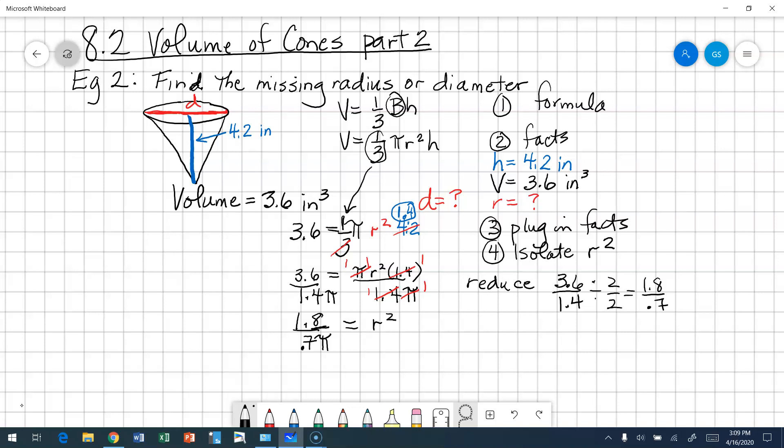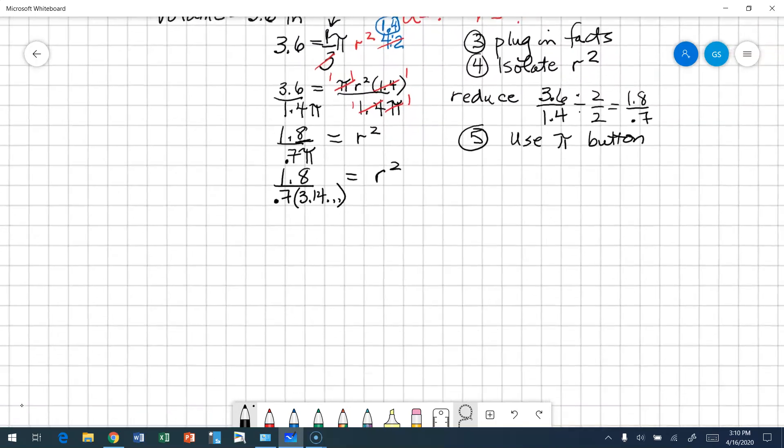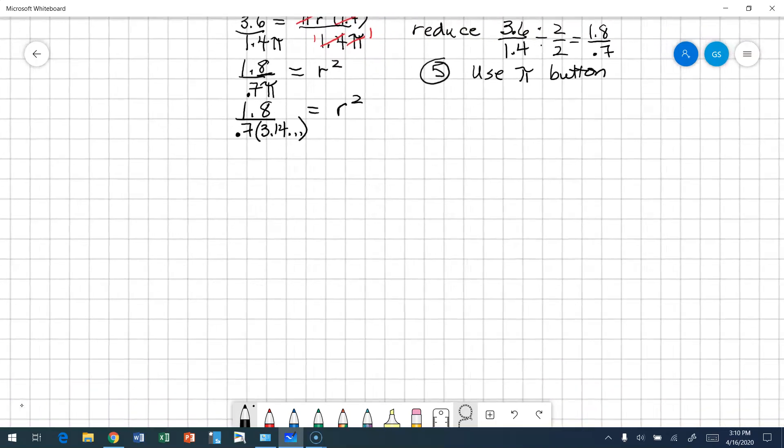Okay, I'm not going to ask you to do this by hand. I am going to expect that you're going to use a calculator. So the first thing we want to do is we are going to use the pi button when we're dividing. So we're going to take 1.8 and divide it by 0.7 times 3.14 dot dot dot, and that's going to be equal to r squared. If I take 1.8 and divide it by this, which is going to be about a low point to something, so when I divide that I wind up with about 0.8 is equal to radius squared.